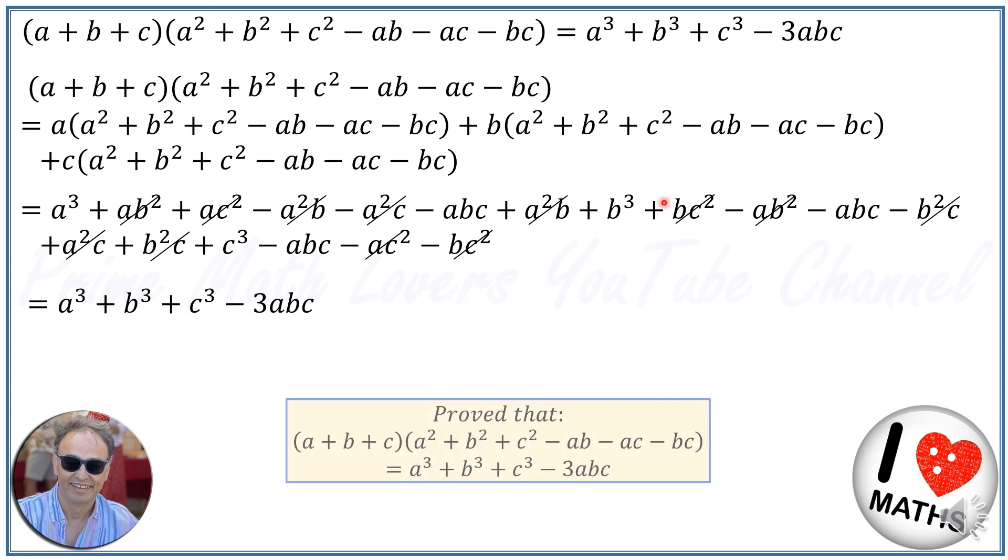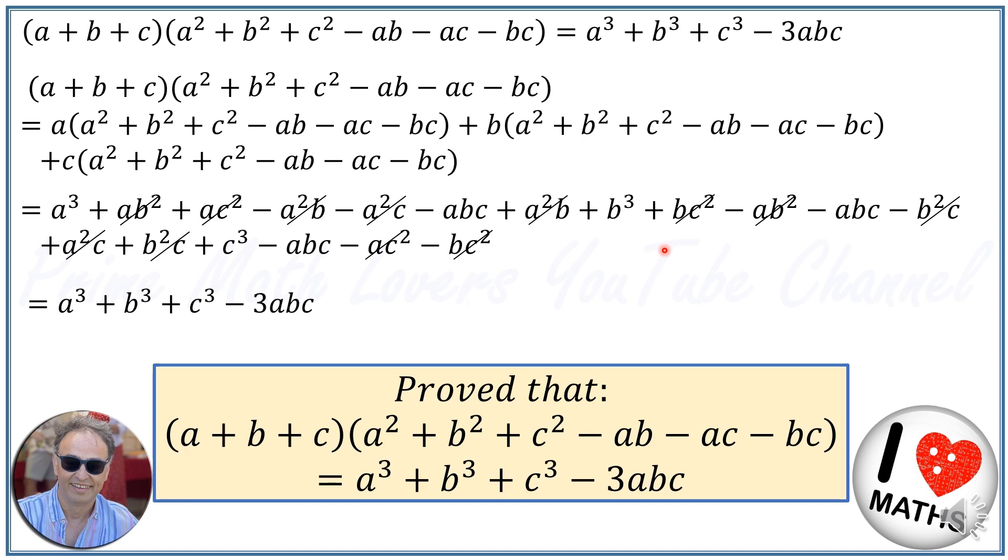And this proves the identity: a plus b plus c times a squared plus b squared plus c squared minus ab minus ac minus bc is equal to a cubed plus b cubed plus c cubed minus 3abc.